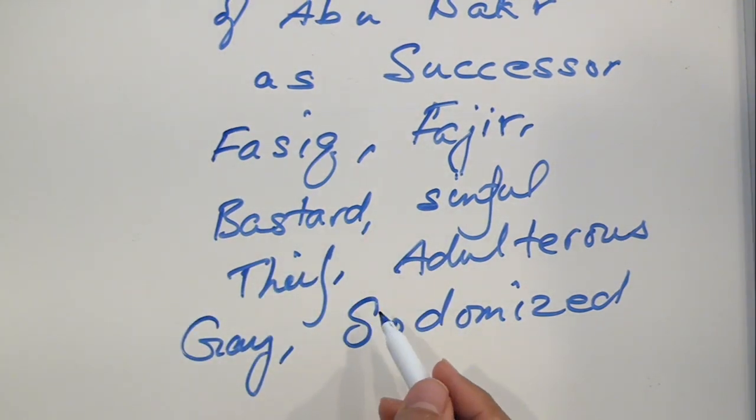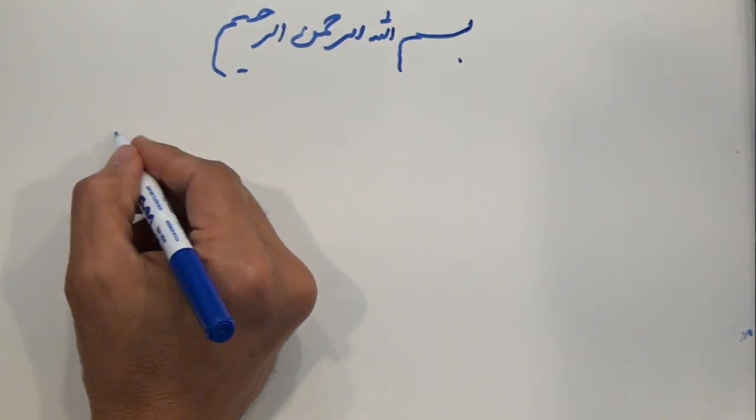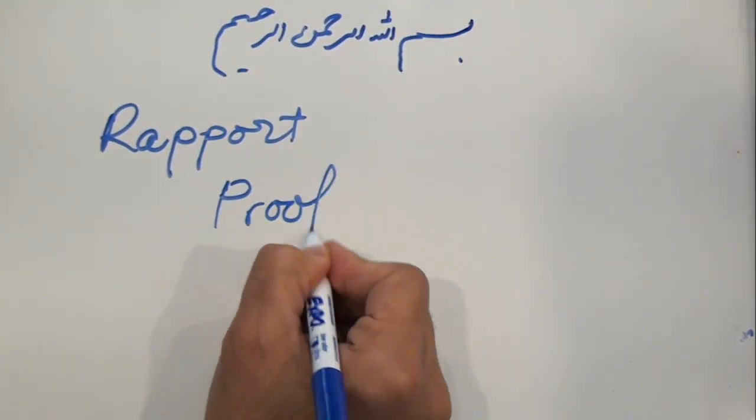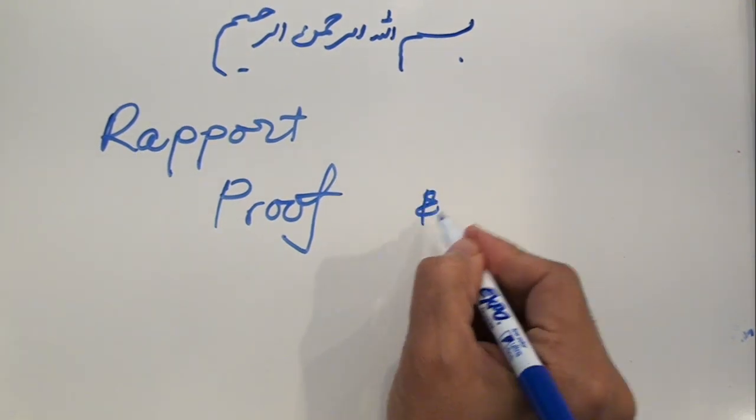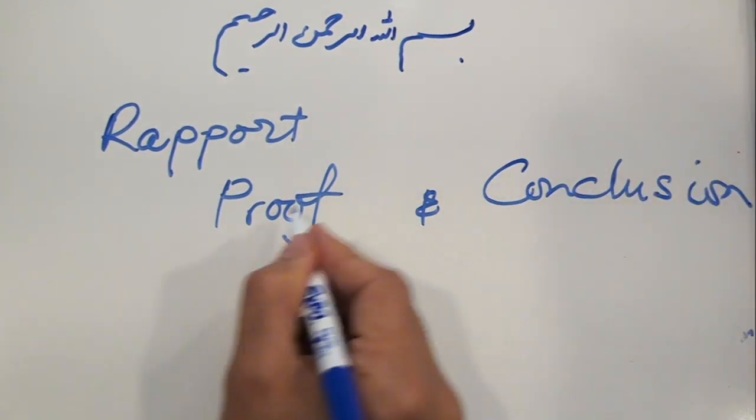So if a person led prayers, it does not necessarily mean that he was not one of the above. How do you prove that he is also the heir of the Nabi sallallahu alayhi wa sallam in all other affairs? That's not provable. That doesn't mean there should be a commensurability, a relationship, a rapport between a proof and the conclusion that we are trying to derive from that proof. The proof should lead to that conclusion.